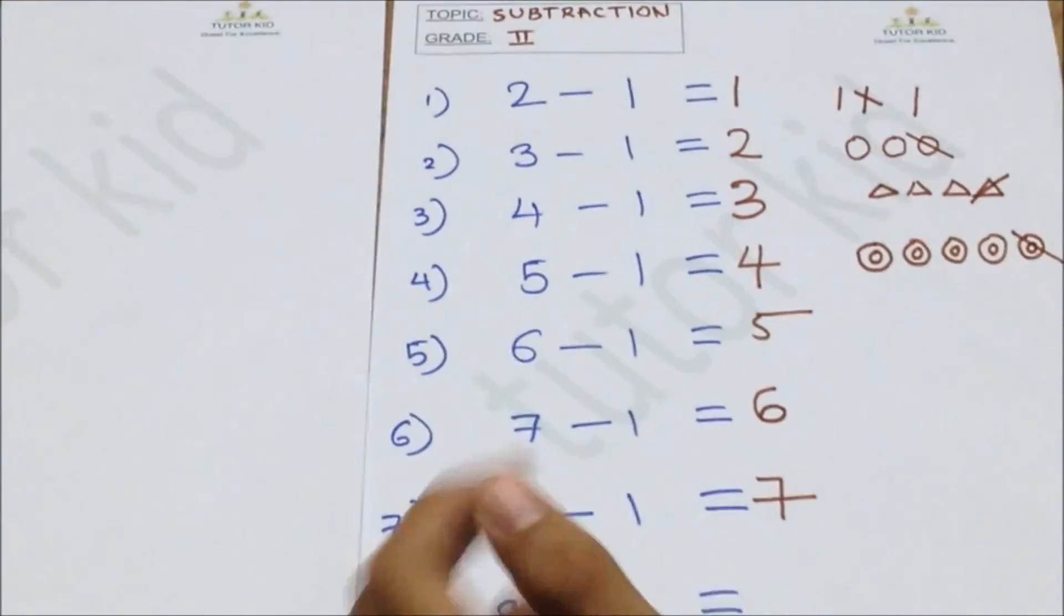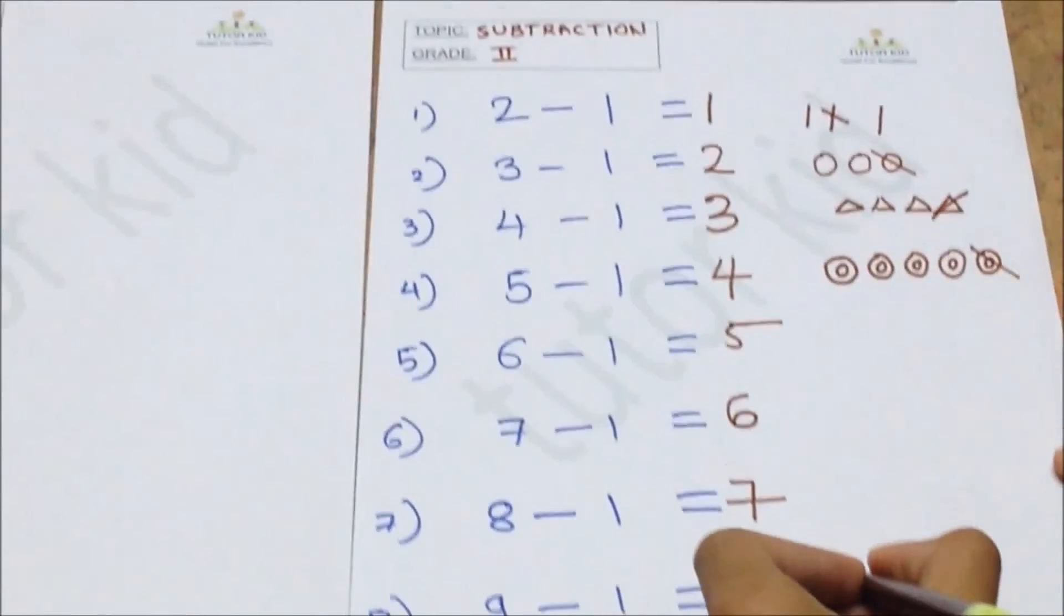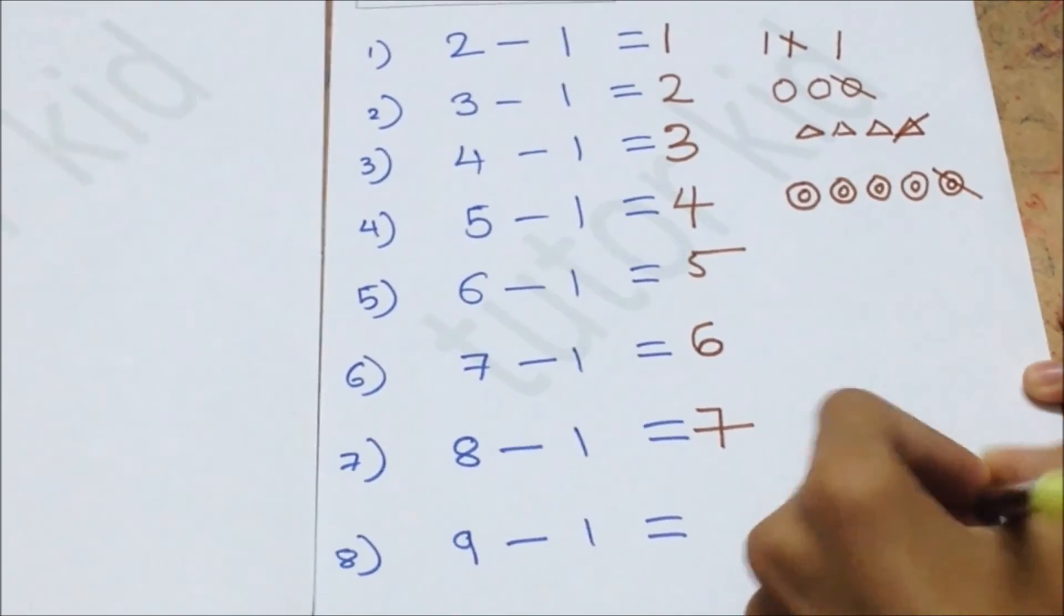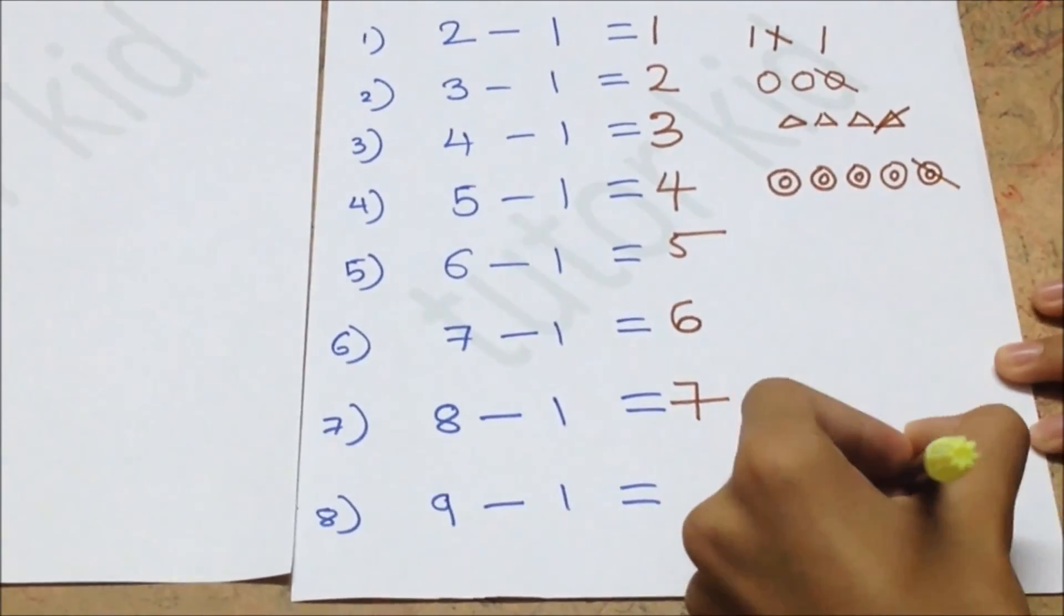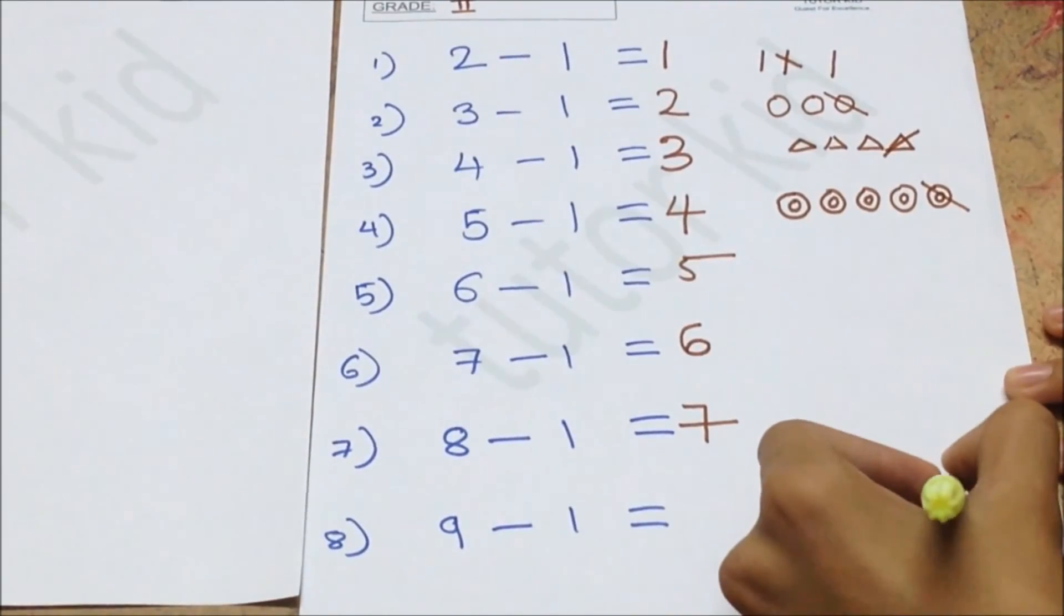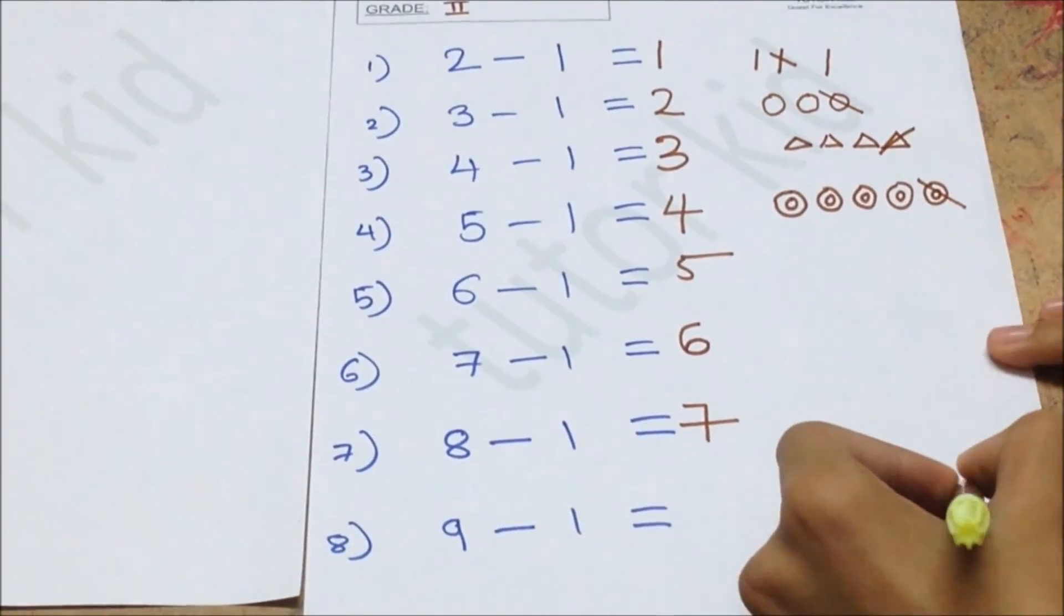We have nine sticks. If we have broken one stick, how many full sticks remaining? Eight.